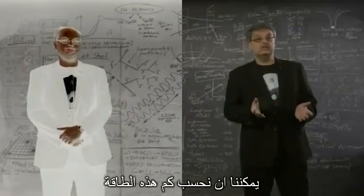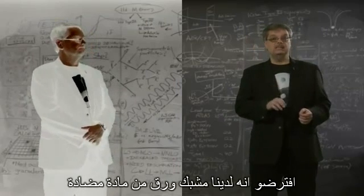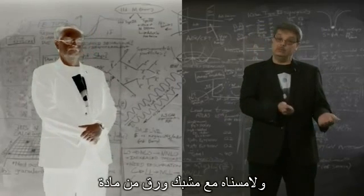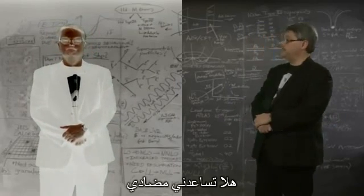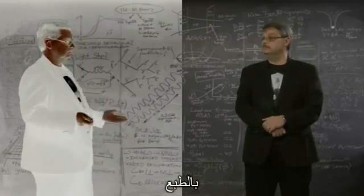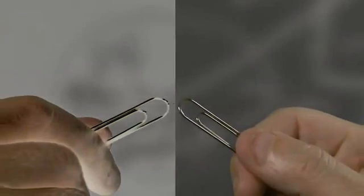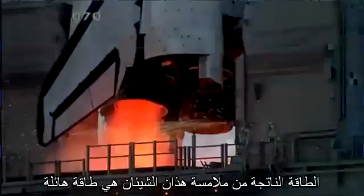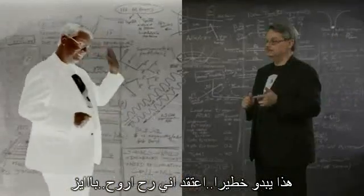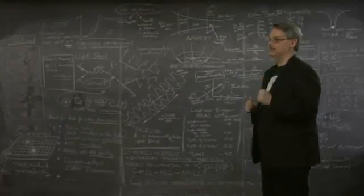We can work out just how much. Suppose we had an antimatter paperclip and touched it to a matter paperclip. Can you help me out, anti-me? Sure. We'll take these matter and antimatter paperclips and touch them together. The energy that would be released when these two things are combined is enormous — about 20 times as much energy as it takes to lift the space shuttle into orbit. That sounds dangerous. I think I'll get out of here. Bye. Good idea. I'll see you later.